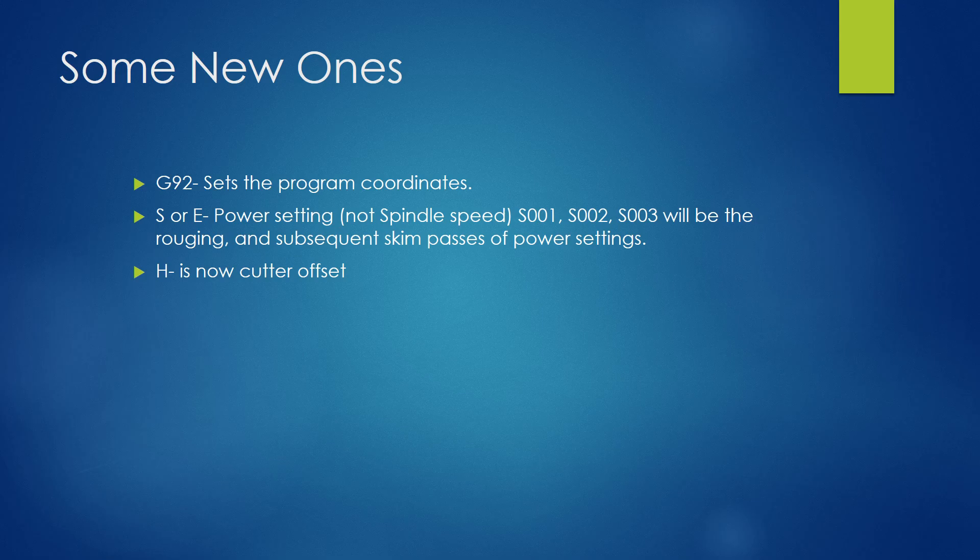Our S or E is going to become our power setting. So an S1, S2, S3 is going to be the power setting that we're going to be utilizing and you might say, why would you need three? Well, typically we're going to go rough around a part and then we're going to leave a small tab. We're going to go back around the part the opposite direction with a different power setting to change that finish and our dimensional accuracy.